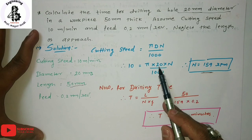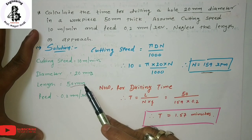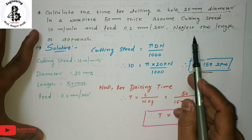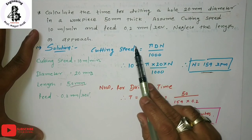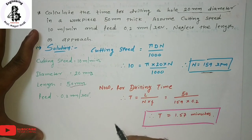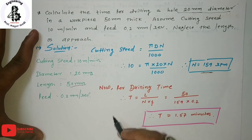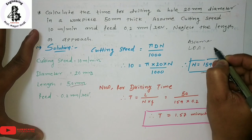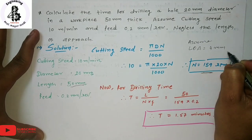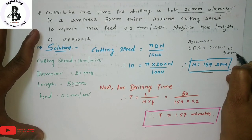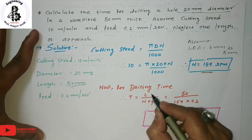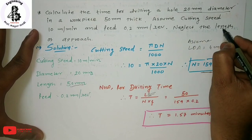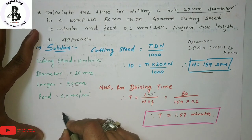So 1.57 minutes are required to perform drilling a 20 mm diameter hole in 50 mm thick material. One important note: in this problem we neglected the length of approach. In some cases, if it is not neglected, you should assume the length of approach to be approximately 4 mm to 5 mm, which is then added to the total length.